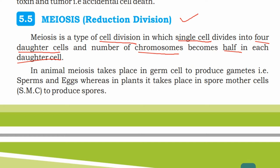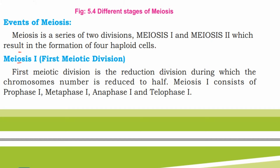In animals, meiosis takes place in germ cells to produce gametes — that is, sperm and eggs — whereas in plants it takes place in spore mother cells (SMC) to produce spores.